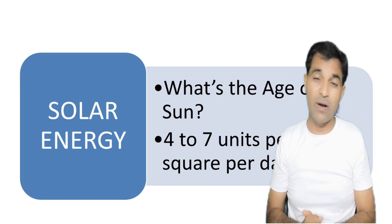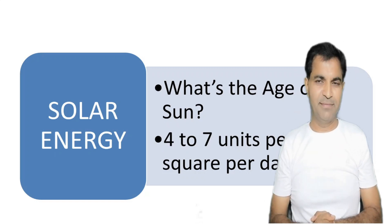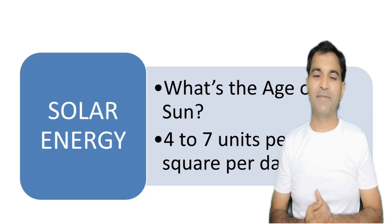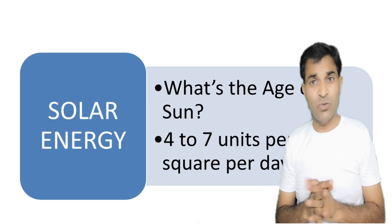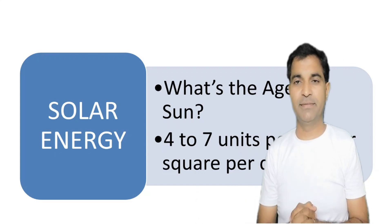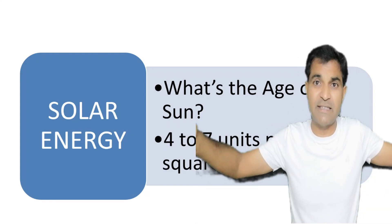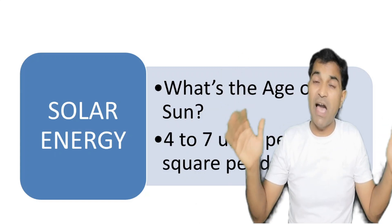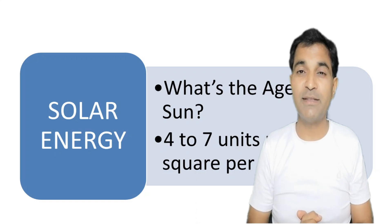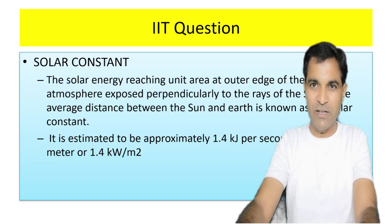The Sun is the ultimate source of energy. Find out the age of the Sun on Google and put the answer in the comments. The Sun gives 4 to 7 units per square meter per day, approximately 5 to 6 units per square meter. Think about the capacity of solar power. Now, this is an IIT question: what is the solar constant?